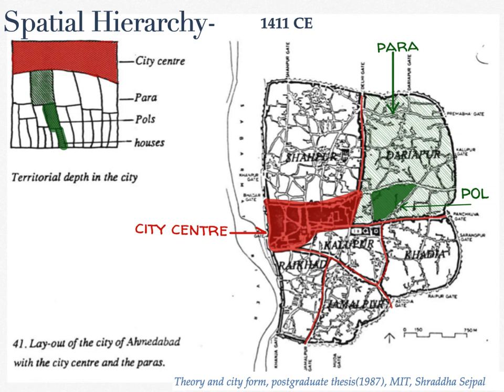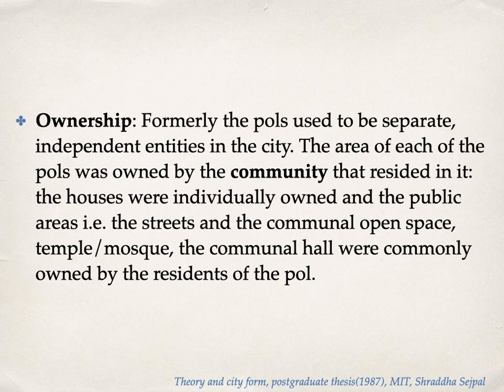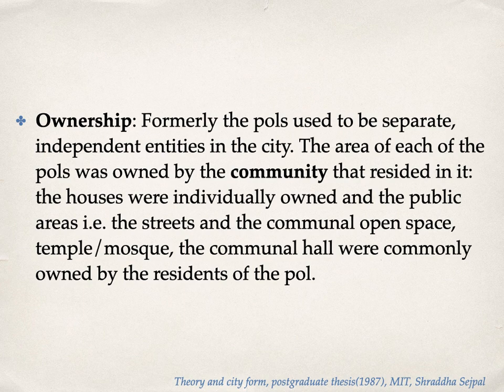The government offices and houses of the nobles were laid out in the core, marked in red. The major roads, also marked in red, were laid out by the government. But the padas and the poles were just negotiated among the community. Formerly, the poles used to separate independent identities in the city. The area of each of the poles was owned by the community that resided in it. The houses were individually owned, and the public areas — the streets, the communal space, and the communal hall — were commonly owned by the residents of the pole.